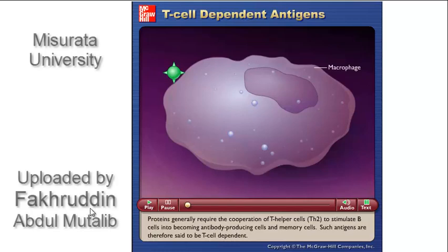Proteins generally require the cooperation of T helper cells, Th2, to stimulate B cells into becoming antibody-producing cells and memory cells. Such antigens are therefore said to be T cell dependent.